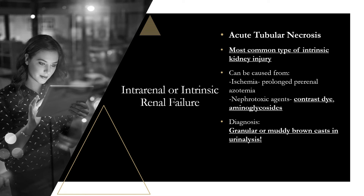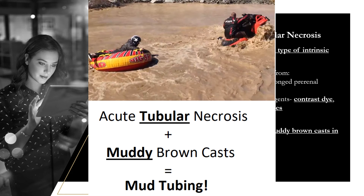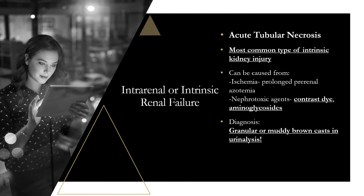A mnemonic for ATN's muddy brown casts: picture someone tubing in mud — being pulled through mud on an inner tube behind an ATV. Acute tubular necrosis → 'tubing' → muddy brown casts. Once you have that image, you won't forget it.